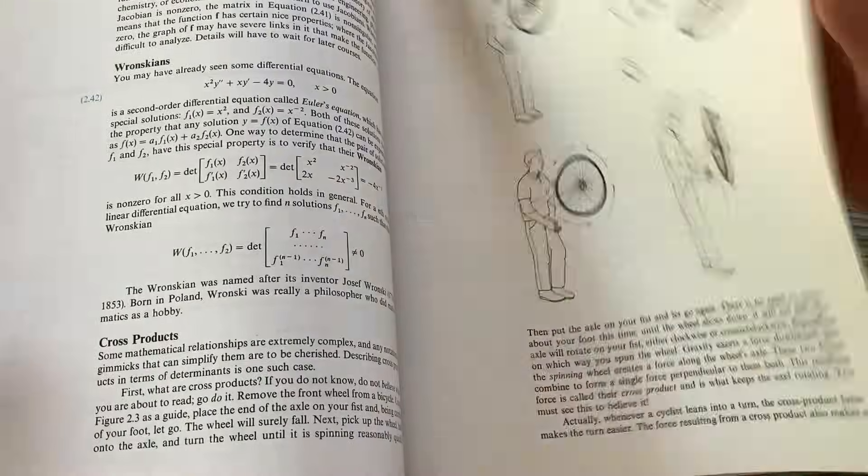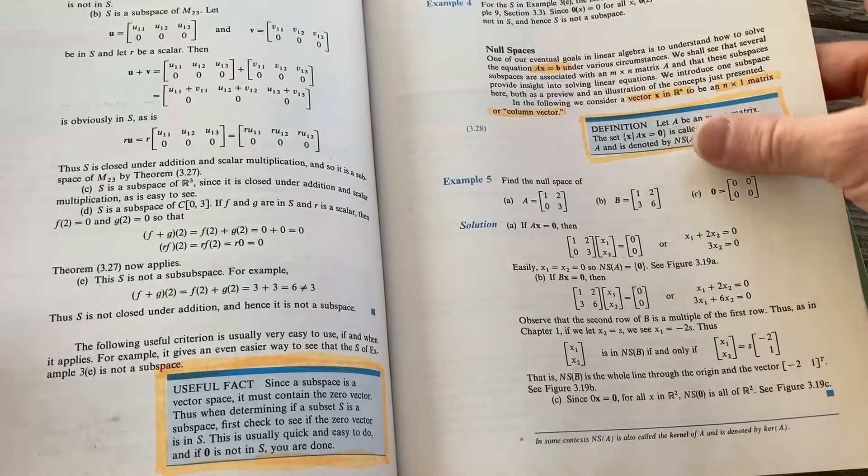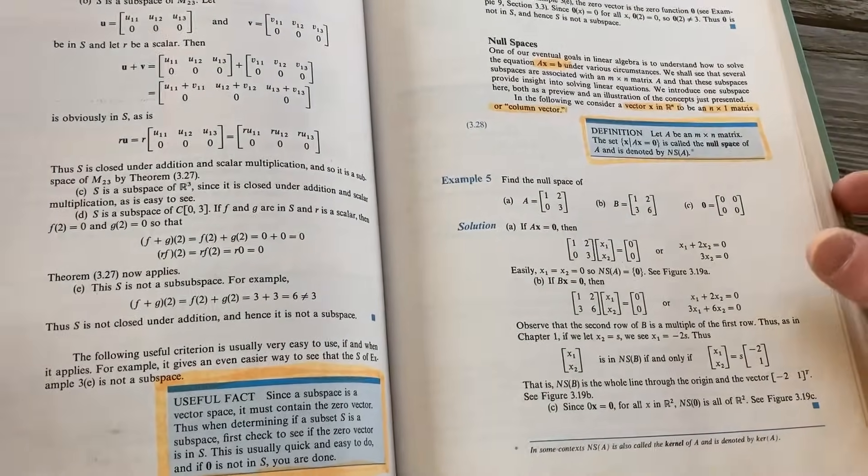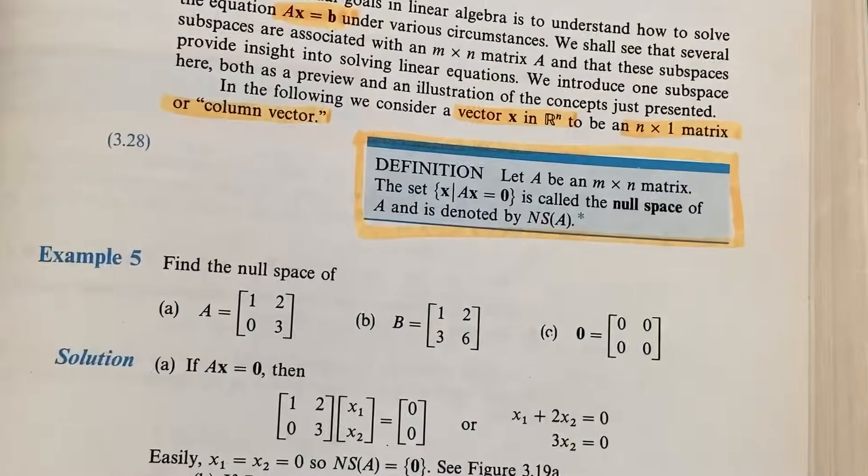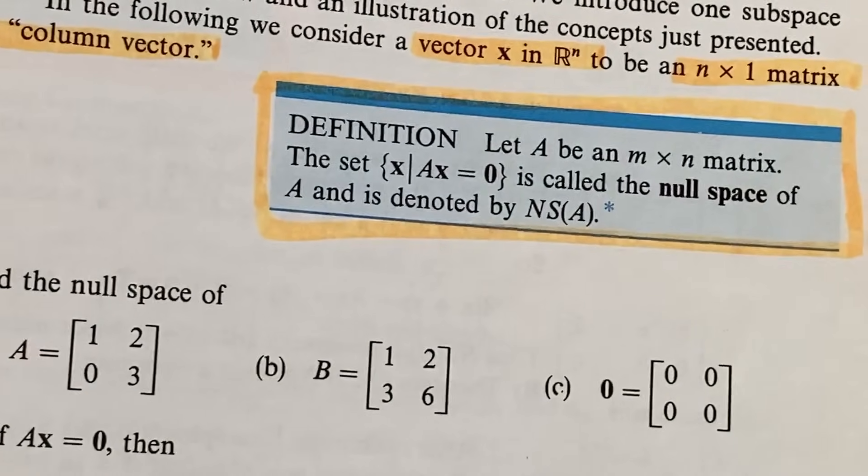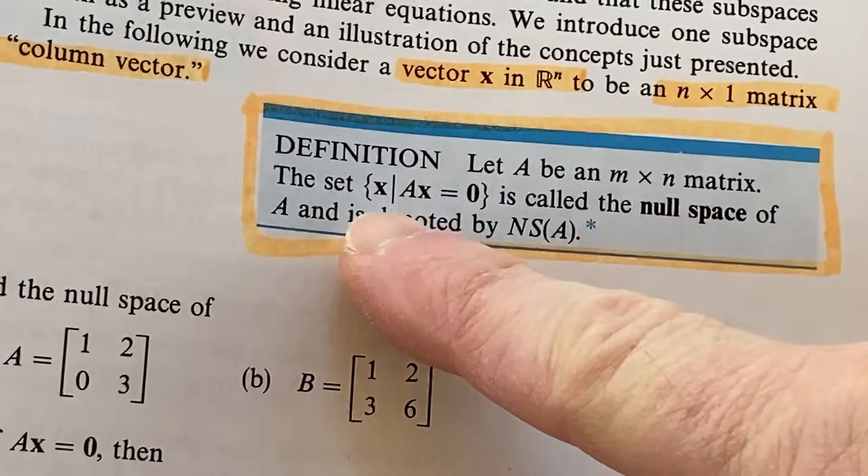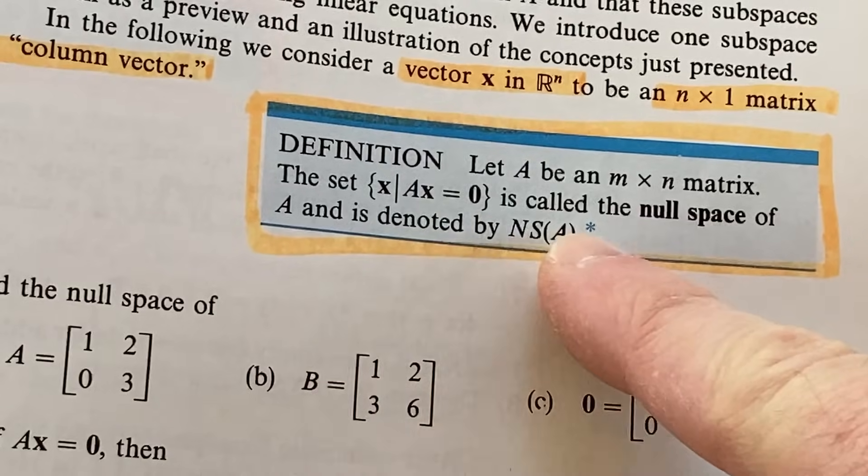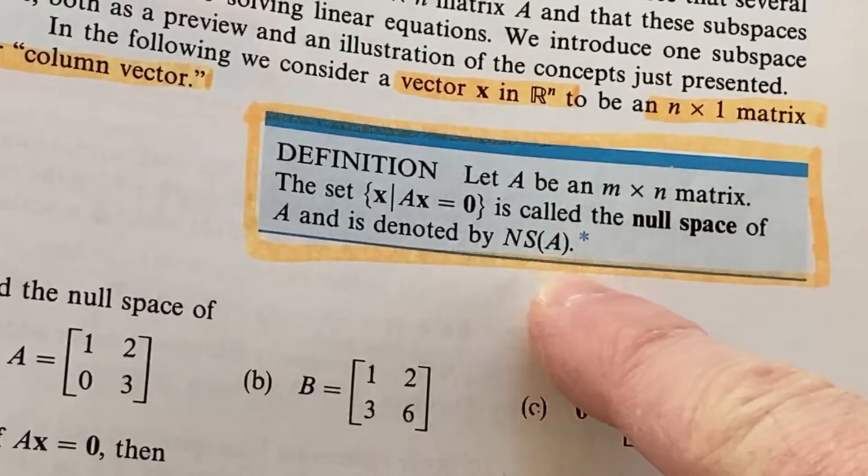So there are a lot of computational aspects. Oh, this is cool. So whoever was using this book before us was highlighting things. Definition. Let A be an M by N matrix. The set of all X, such that AX equals zero, is called the null space of A. It's denoted by NS(A).